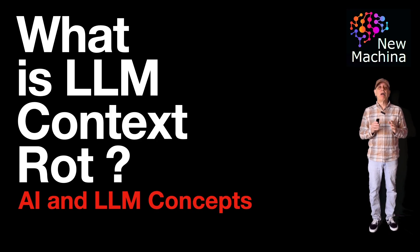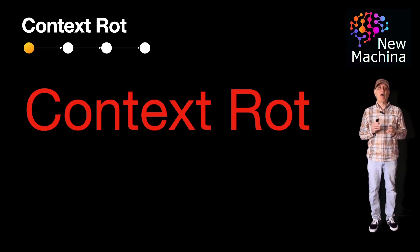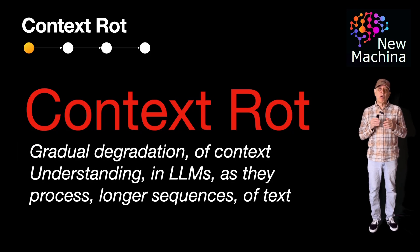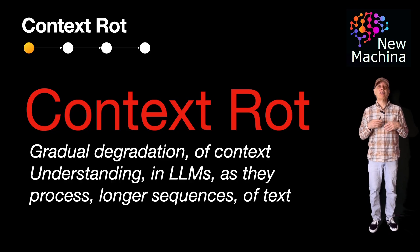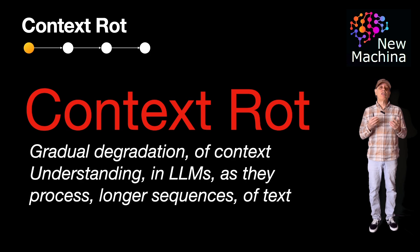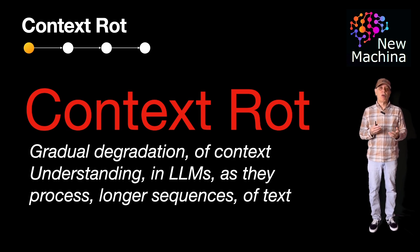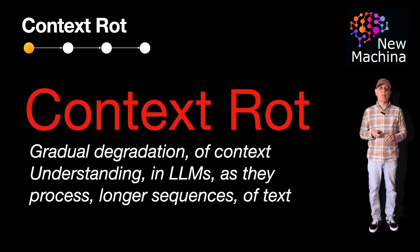So what is LLM context rot? LLM context rot refers to the gradual degradation of context understanding in large language models as they process longer sequences of text. This occurs because LLMs have a limited context window, meaning they can only consider a fixed number of tokens at a time. In simple terms, LLM context rot is when a language model starts losing track of the conversation or topic over time.